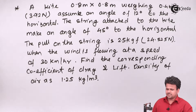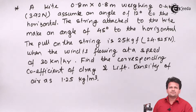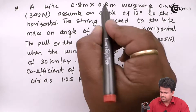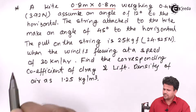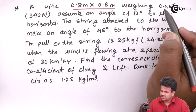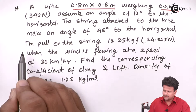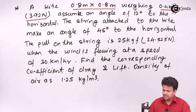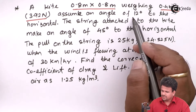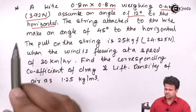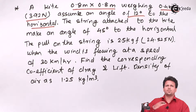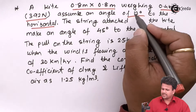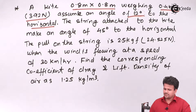We have a problem related to one of the examples we took for lift and drag — that is a kite. A kite 0.8 by 0.8 meters, weighing 0.4 kgf that is 3.92 Newtons. The kite is inclined at an angle of 12 degrees to the horizontal.